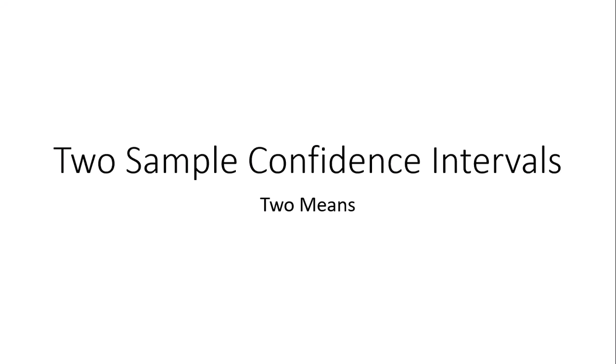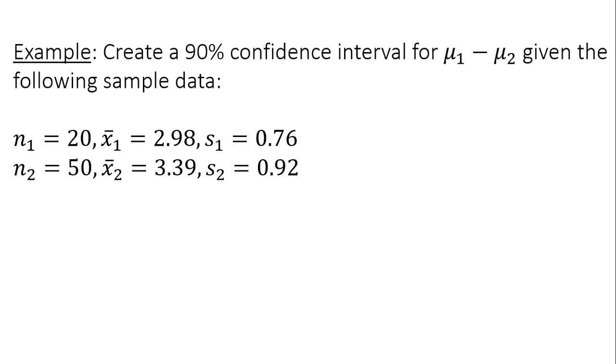Hello, this is a video on making a two-sample confidence interval for two means. Create a 90% confidence interval for mu1 minus mu2 given the following sample data.